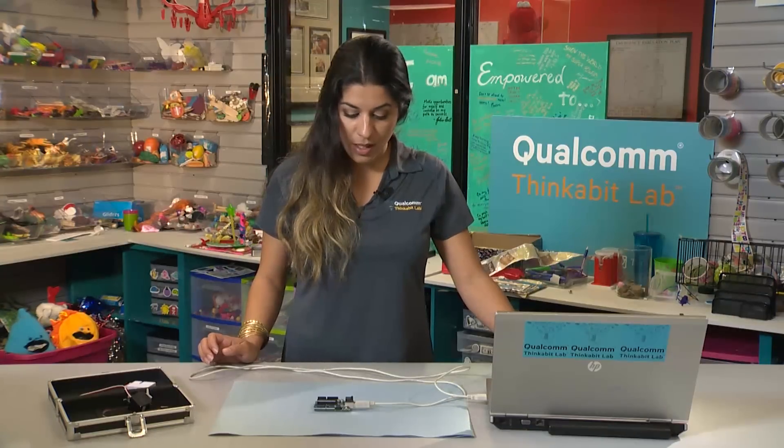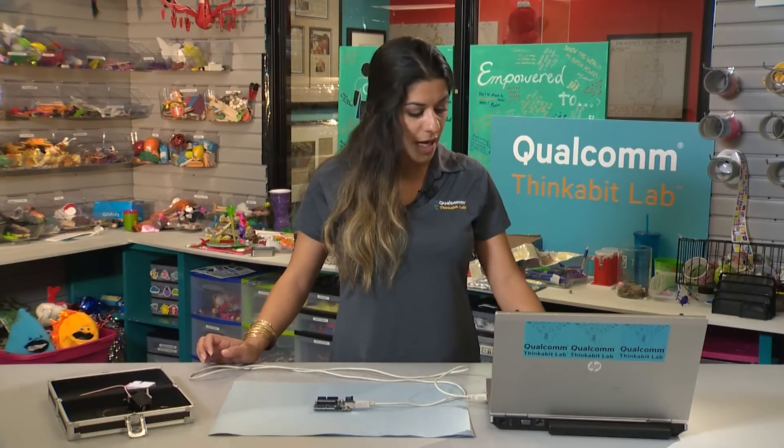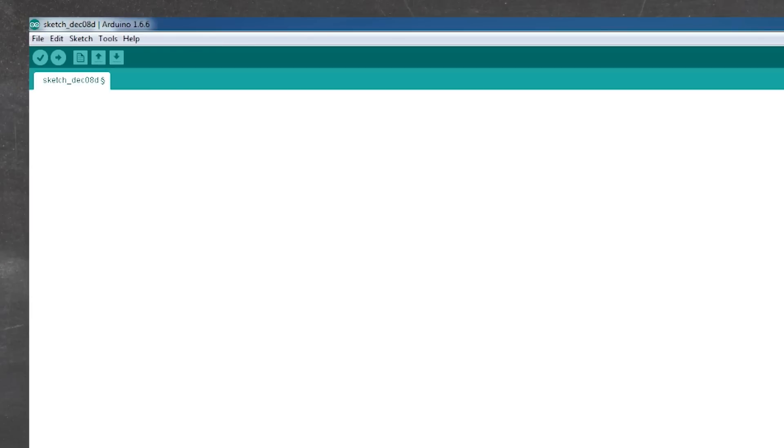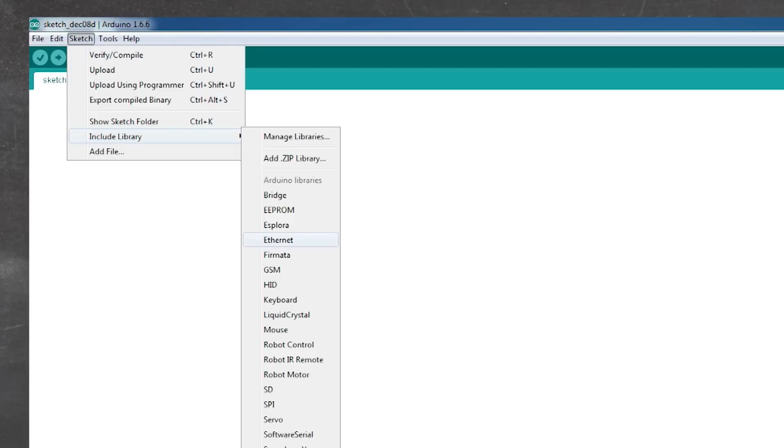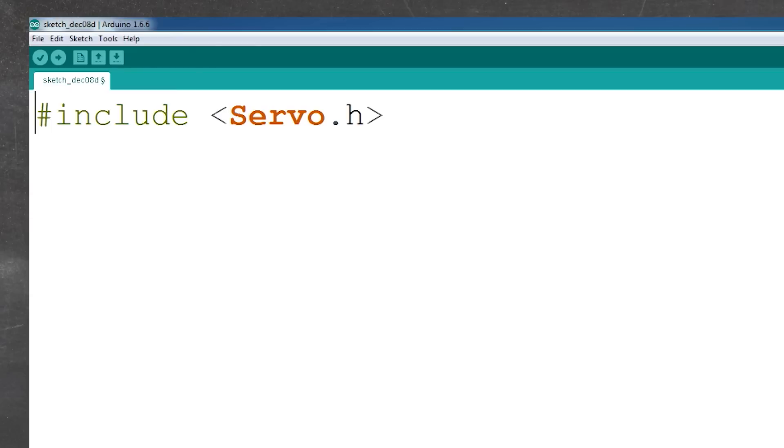The next thing I want us to do is actually get that library. The library that will generate the signal that we need. Go to Sketch, Include Library, and then click on Servo. Then it pops up with that line of code.